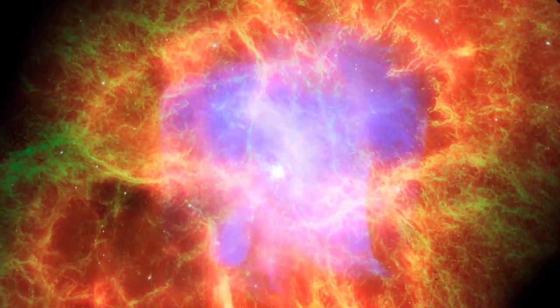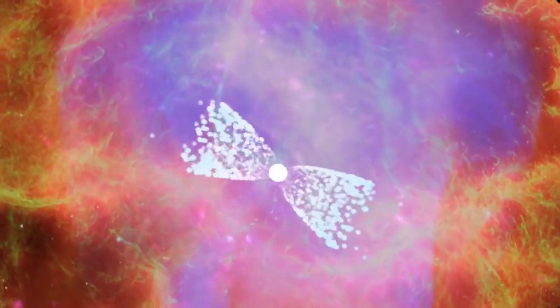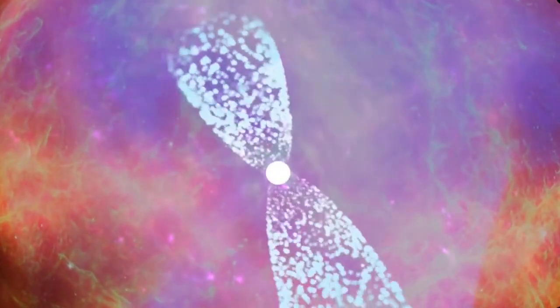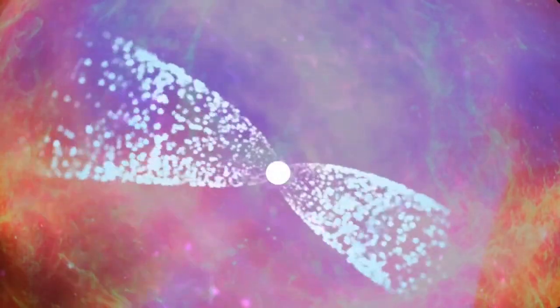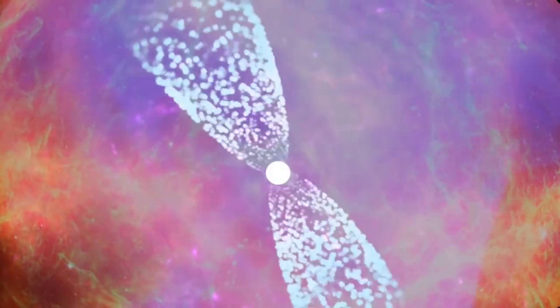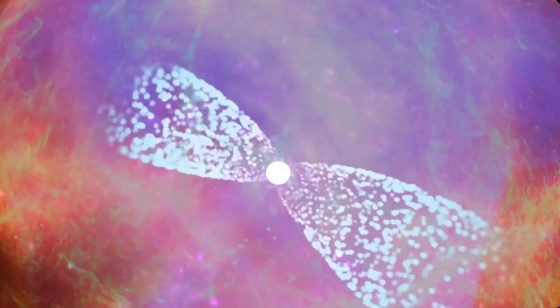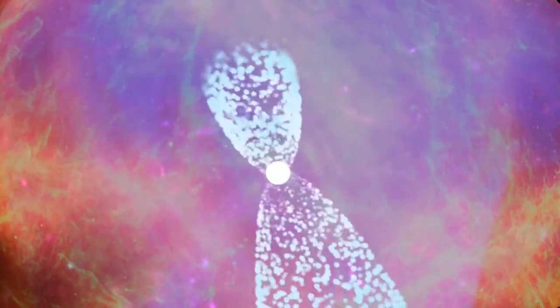Here an intense magnetic field focuses radiation at the star's magnetic poles, producing a beam of radiation sweeping across space like a lighthouse beacon. Here the star's magnetic field contains and directs the flow of charged matter.